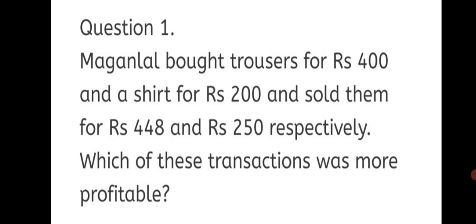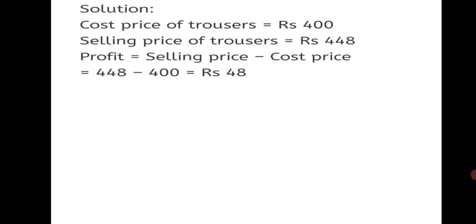In both cases, Maginlal has made a profit — while selling trousers and while selling shirts. If we find profit using just the formula, we will not be able to compare where he made more profit because the costs are different. So here we have to find profit in percentage, separately for trousers and separately for shirt. Cost price of trousers is Rs. 400 and selling price of trousers is Rs. 448.